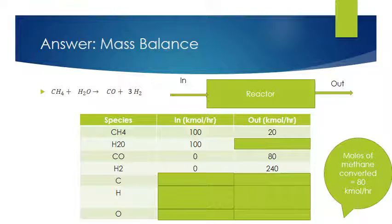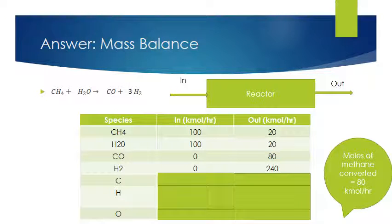We still have one block missing — water. The reaction tells us that for every one mole of methane we use up, we use up one mole of water. We used up 80 kilomoles per hour of methane, therefore we used up 80 kilomoles per hour of water. We had 100 coming in, we used up 80, and so 20 kilomoles per hour of water must be flowing out.